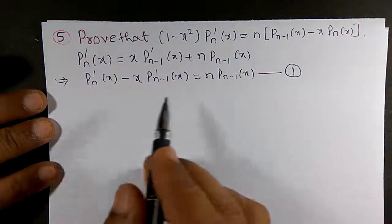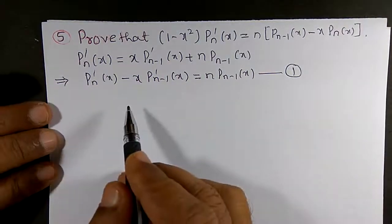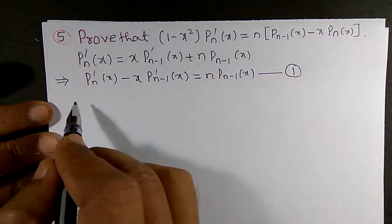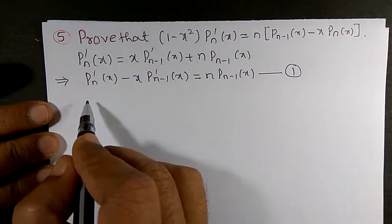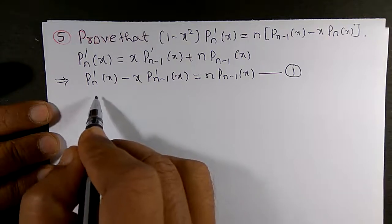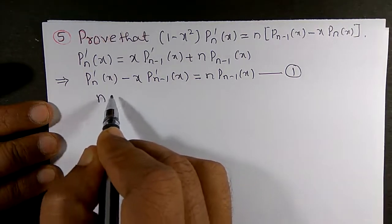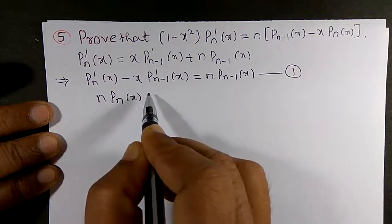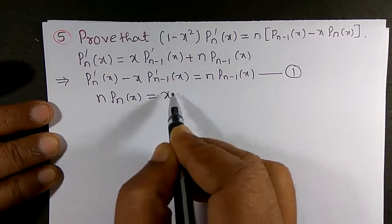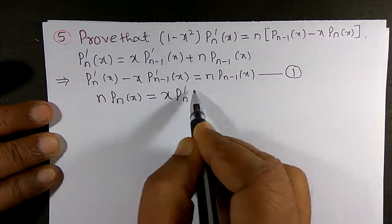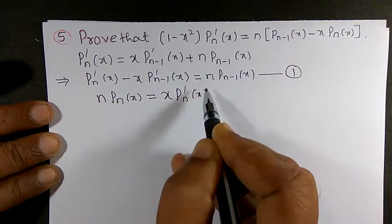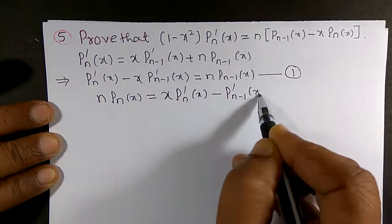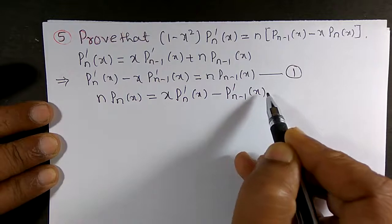I want to use another recurrence relation, namely recurrence relation 2. From recurrence relation 2, I can obtain: n · Pₙ(x) = x · P'ₙ(x) - P'ₙ₋₁(x).